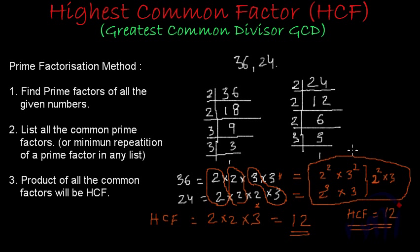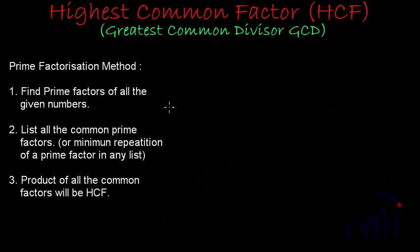There is one more style in which we can use this prime factorization method to find GCD. This method can be extended to any number of given numbers. Let's find the GCD of 3 numbers using this alternate method. Suppose this time we are trying to find the HCF of 12, 18, and 24.